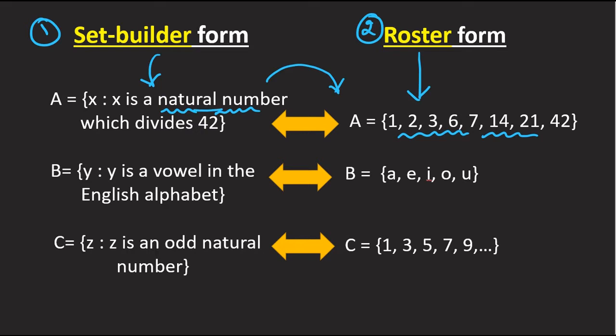For example, in roster form: natural numbers which divide 42 — so one, two, three, six, and so on up to 42. Here, completely divisible means the remainder is zero. That is called completely divisible, and that is the roster form.